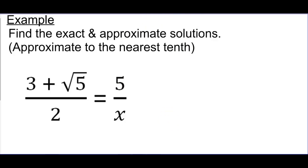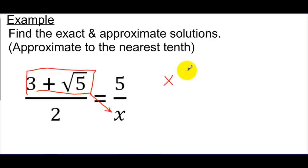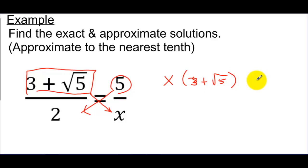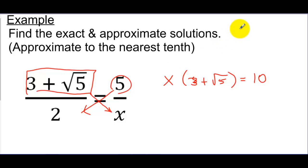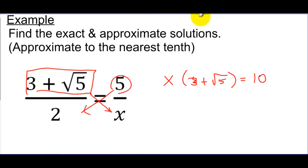For our problem, when we cross multiply, this whole expression gets multiplied by x. So here's what that's going to look like: x times (3 plus the square root of 5), and that's going to be equal to 5 being multiplied by the 2, which is 10. Now you might think you want to distribute, because that's usually what we do in these cases. But 3 plus the square root of 5 just represents a number. So if I had a simple problem like 3x equals 10, I would just divide both sides by 3. It just so happens that our number is a more complicated radical expression.